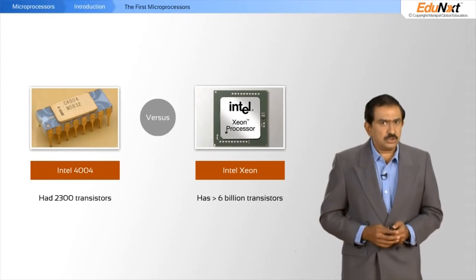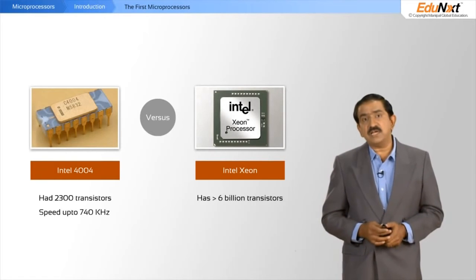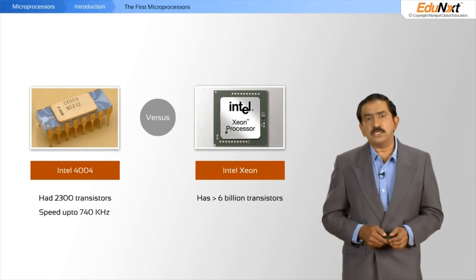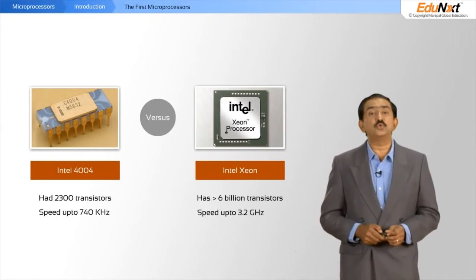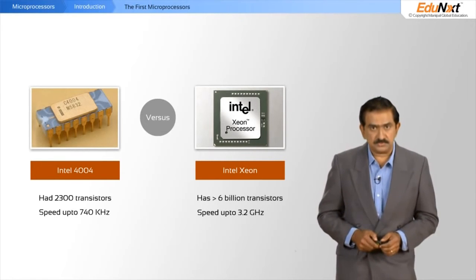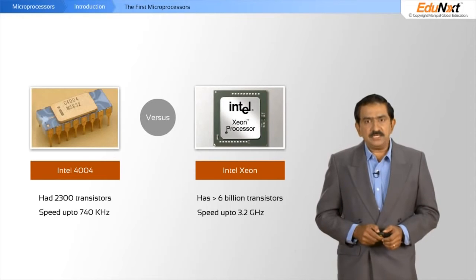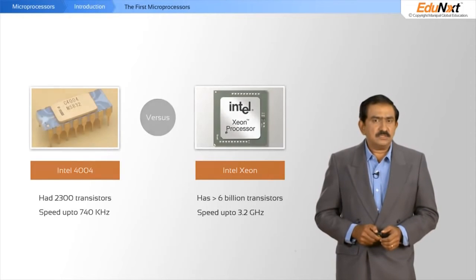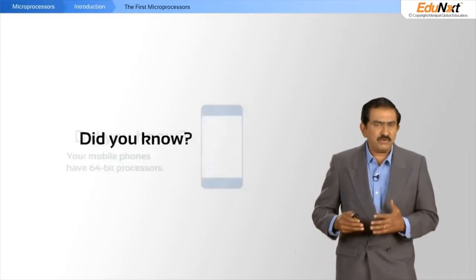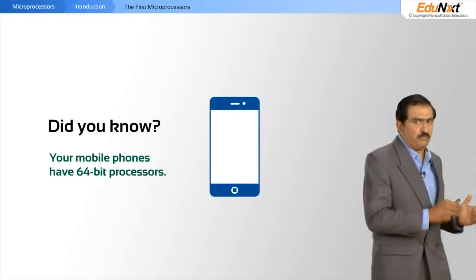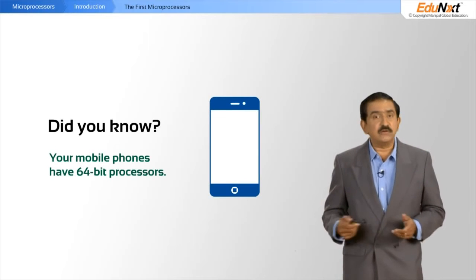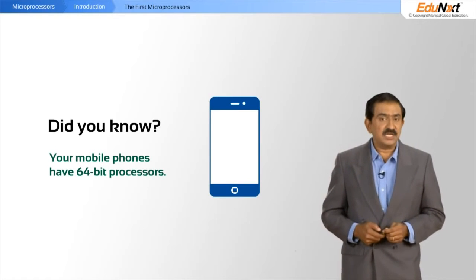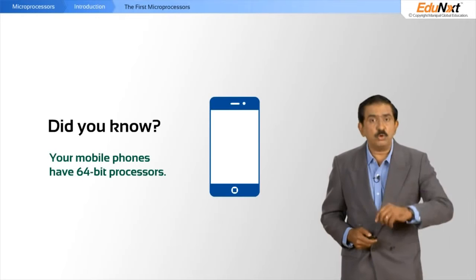The 4004 ran at 740 kilohertz, whereas today's processors run at in excess of 3.2 gigahertz. And if you think of where we have gone from 4 bits, today the state of the art is 64 bits — even on your mobile phone.